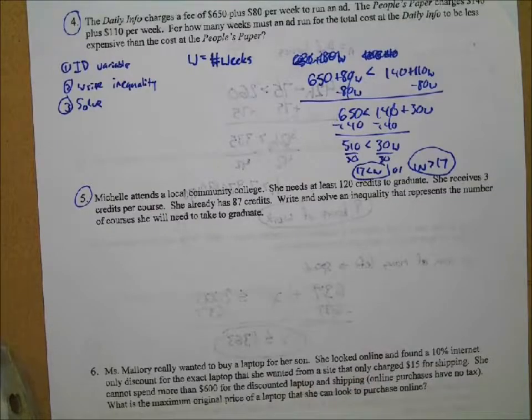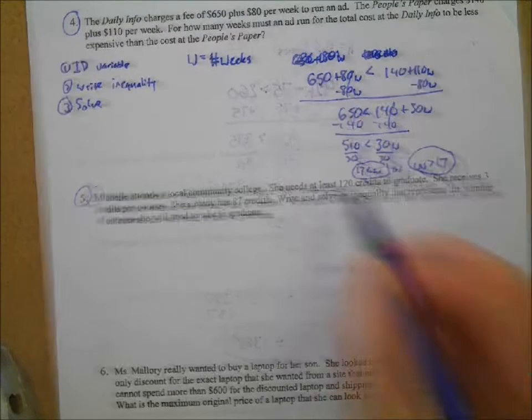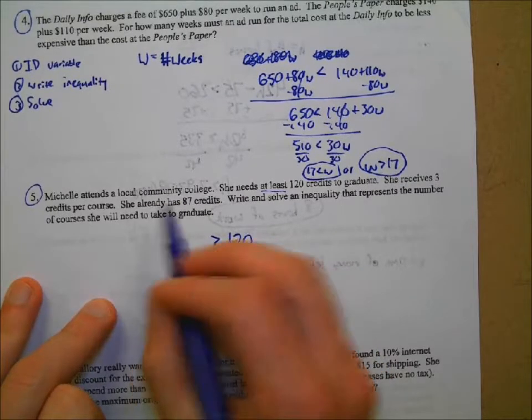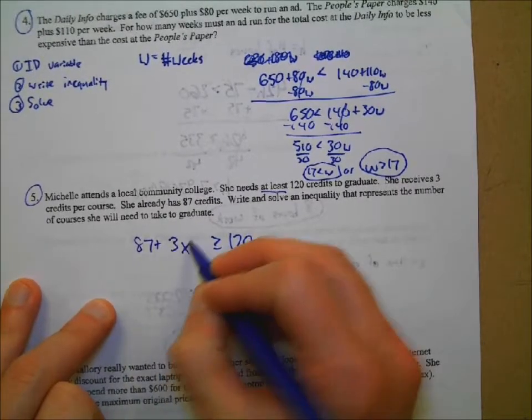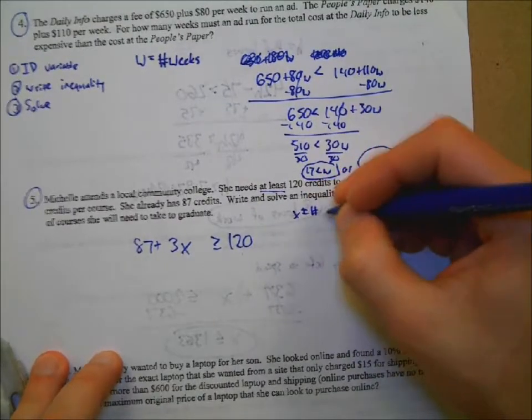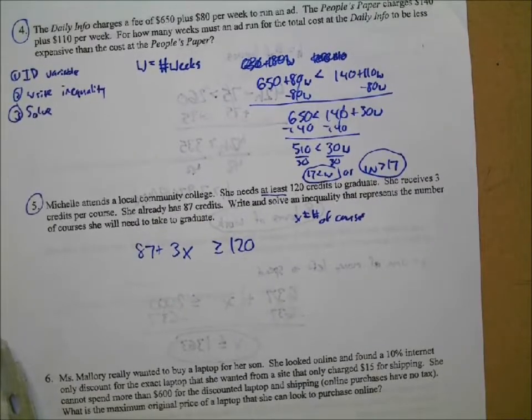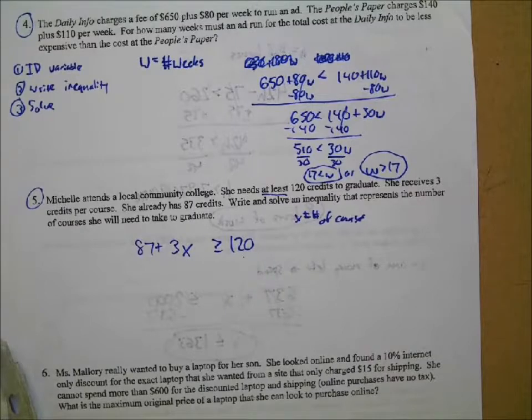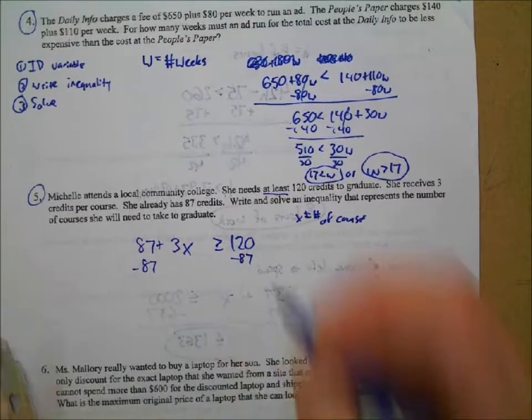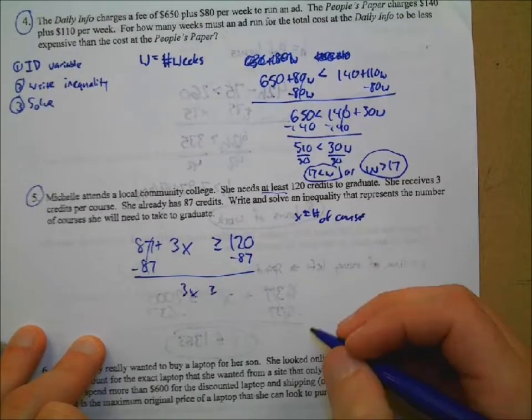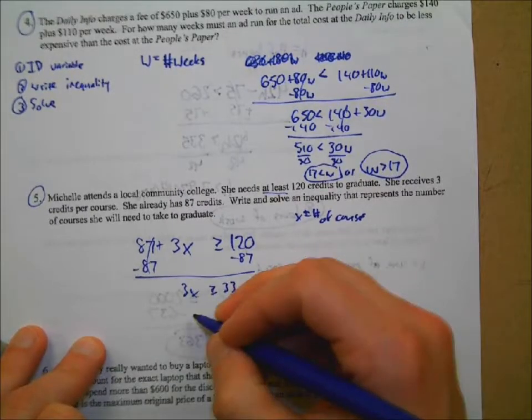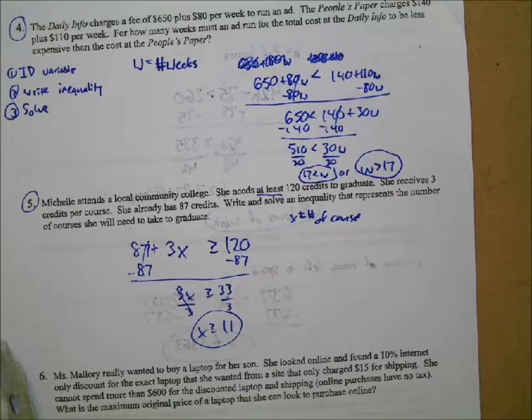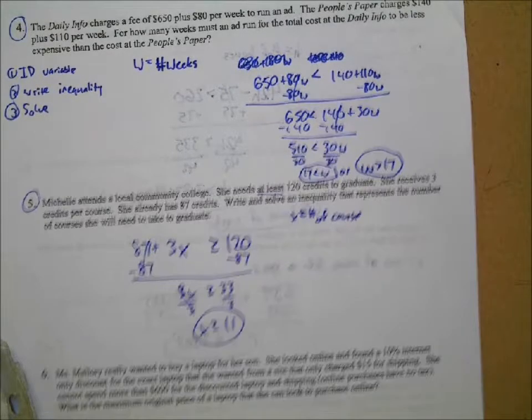Let's do the next one here. All right. All right. Number five. Michelle is attending a community college. She needs at least – at least means what inequality symbol? Greater than or equal to 120. She receives three credits per course. She already has 87 credits. So 87 plus three credits per course. There it is. So X is the number of courses. Can it be a amount of credits per course? Well, we know the credits per course is three credits per course. We know that number. We don't know how many courses. That's what we need to know. OK. Number of courses. And so then we can just solve this, right? Minus 87 on both sides. So we get 3X is greater than or equal to, let's see, 3, 13, 33. And so divide both sides by 3. X is greater than or equal to 11. So she would have to take how many courses to graduate? 11 or more, right? She could take 11 or more. OK.